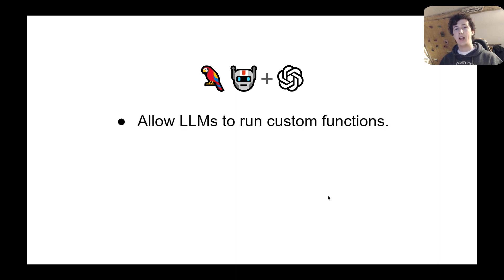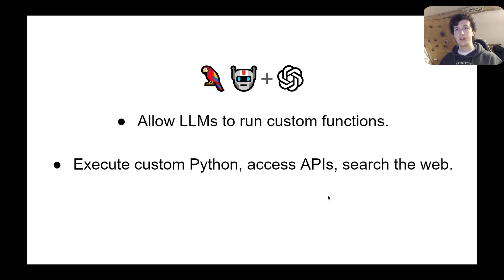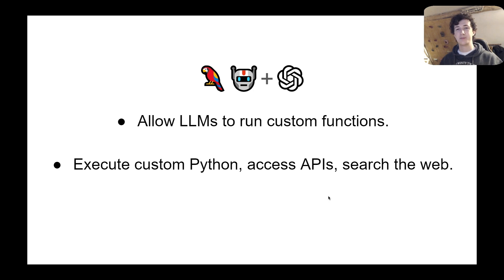This is where tools like LangChain Agents come into play. They allow LLMs to run custom functions, including things like executing custom Python, accessing APIs, and searching the web. In today's tutorial, I'm going to show you how to do exactly that in only a few lines of code. Let's get started.